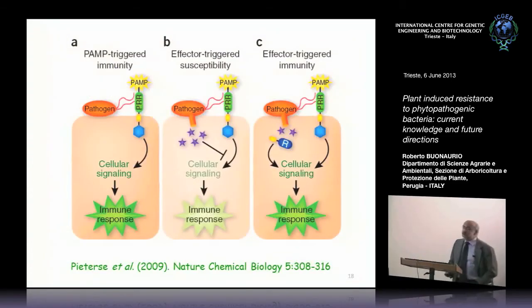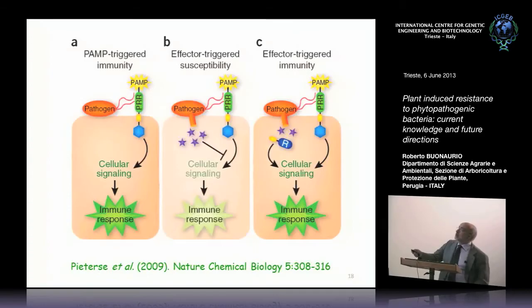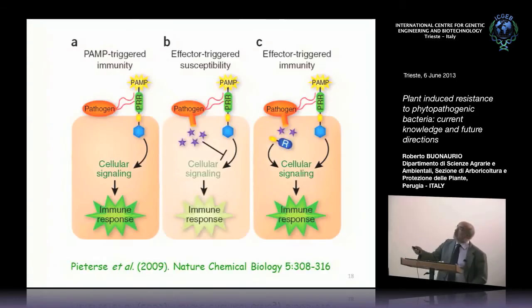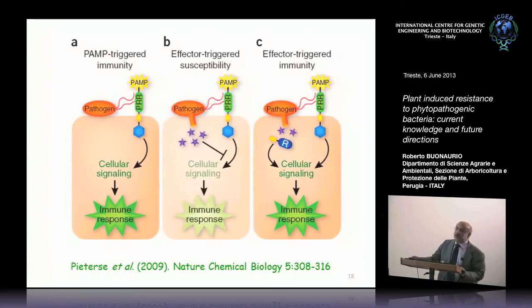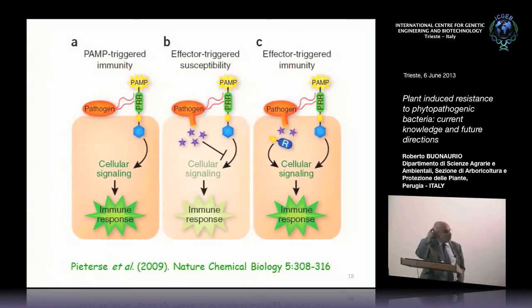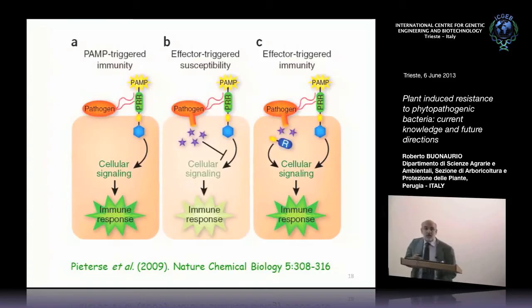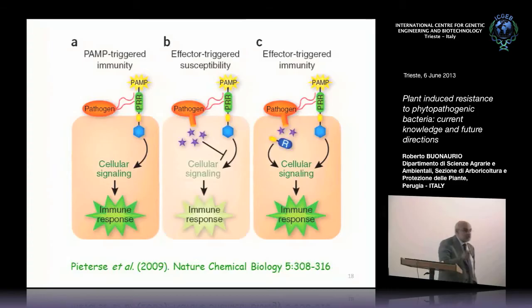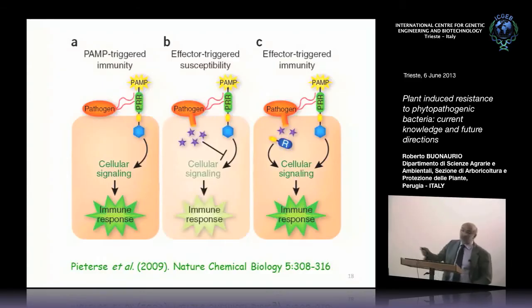In the scheme of the first line of defense — PTI, PAMP-triggered immunity — you can see the bacterium and its flagella functioning as a PAMP. PAMPs are recognized by receptors, initiating a cascade of events leading to the immune response. But the pathogen — many gram-negative bacteria belonging to the genera Pseudomonas, Xanthomonas, Pantoea, Erwinia, Ralstonia, Pectobacterium — produce the Hrp pilus (hypersensitivity and pathogenicity) and use it to inject a cocktail of effectors inside the plant cell.